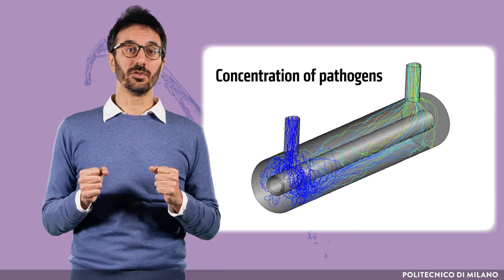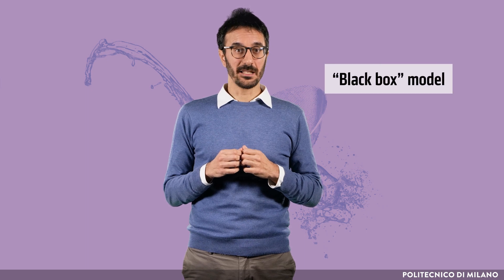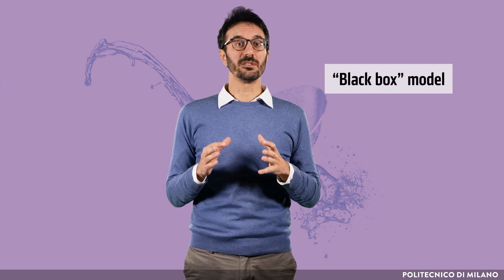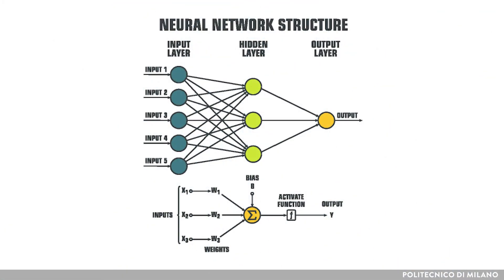On the other hand, in case we don't know all the characteristic equations, or the problem is much more complex, black box models can be applied. This group of models also contains the so-called machine learning techniques, on which a significant part of the so-called artificial intelligence is based. In this case, instead of simulating the process in detail, the model is derived from a set of data.